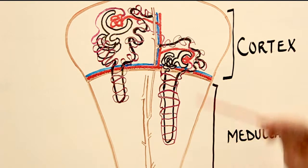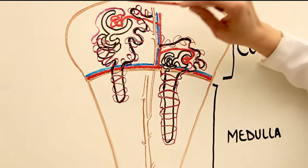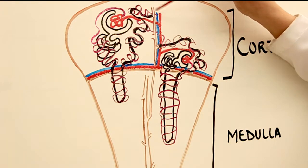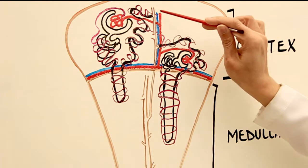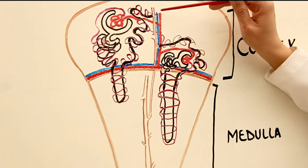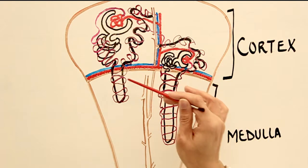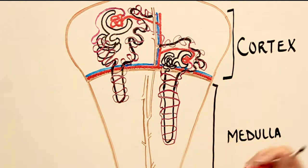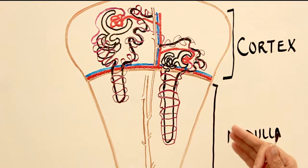The peritubular capillaries form a regular capillary bed — at one end fed by an arteriole, at the other end drained by a venule. These capillaries dump their substance-rich blood into venules. Thousands of these venules eventually form the interlobular veins, which drain into the arcuate veins, which drain into the interlobar veins, and those eventually form the renal vein.